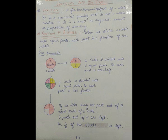For example, as you can see there is a circle. Let us take this circle as one whole quantity. This circle is divided into two equal parts, so each part is one half of the total. If we divide the same circle into four equal parts, each part is one fourth.